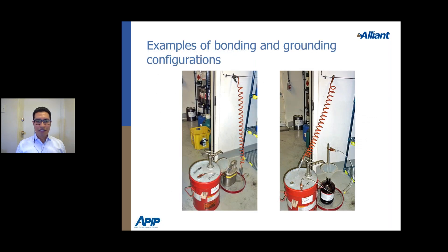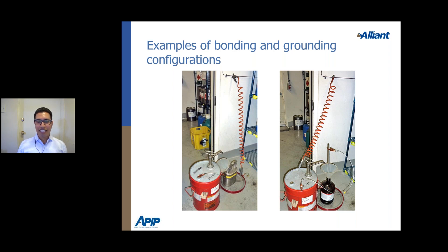Examples of grounding and bonding: the picture on the left shows transfer into a metal container — everything looks fine. The picture on the right shows transfer into a smaller glass container. Since you can't directly ground glass, simply insert a grounding rod into that container — that meets the grounding and bonding requirement for that substance.